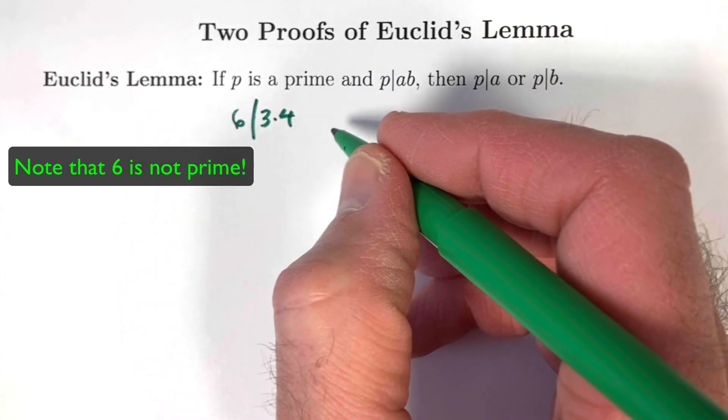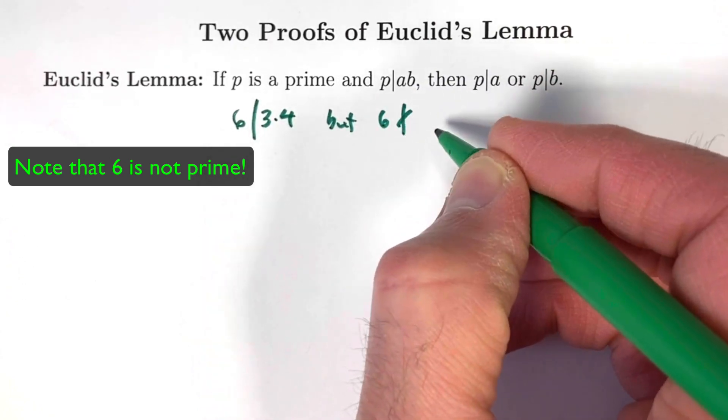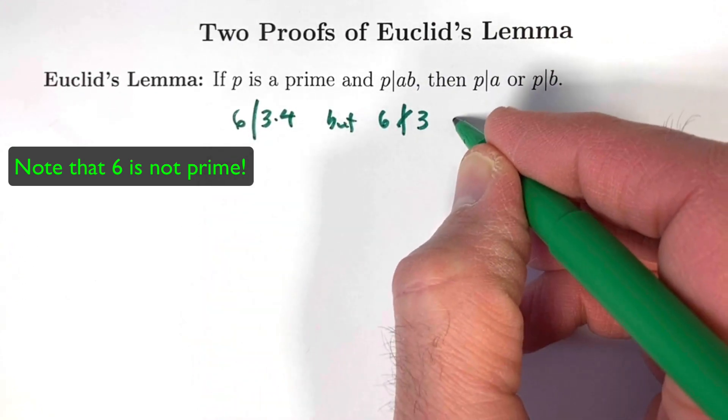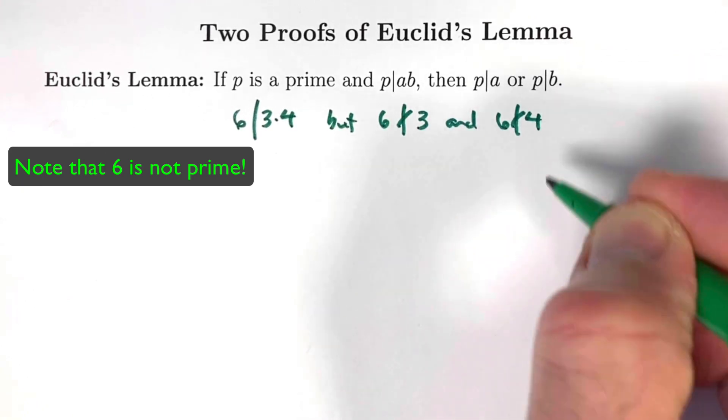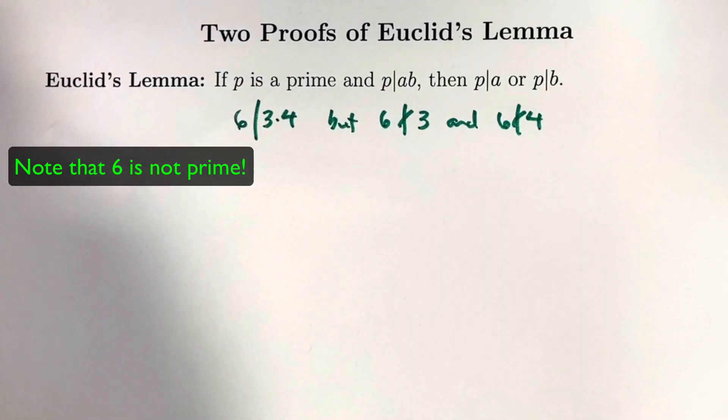12 divided by 6 is 2, but 6 does not divide either factor. It does not divide 3, and 6 does not divide 4. So this conclusion would fail if p were 6. p is a prime is necessary.